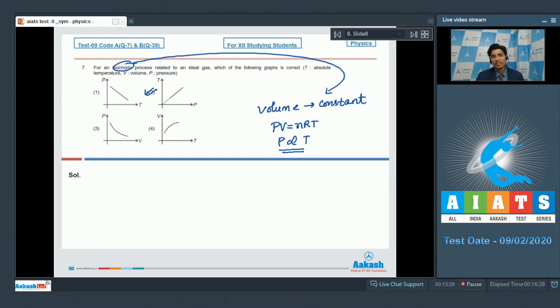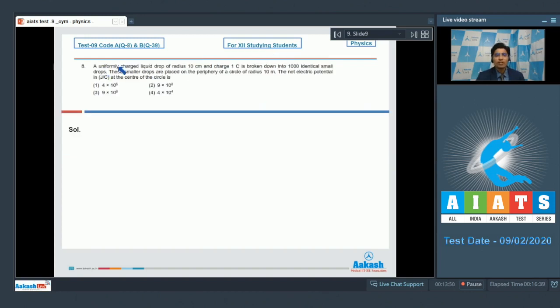Now let us proceed to question number 8. Question 8 says, a uniformly charged liquid drop of radius 10 cm and charge 1 coulomb is broken down into 1000 identical small drops. These smaller drops are placed on the periphery of a circle of radius 10 meters. The net electric potential in joules per coulomb at the centre of the circle is.